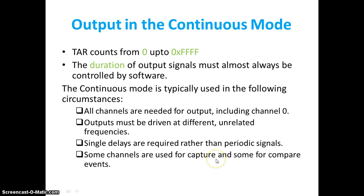Some channels are used for capture and some others for compare events. You cannot always configure into only capture mode or compare mode — channel 0 may be used for compare, channel 1 for capture, and channel 2 for either capture or compare. In those kinds of scenarios you put the timer into continuous mode. The key idea is that all channels might want to drive a timer clock with undefined or unspecified frequencies, and channels may be used in both capture and compare modes.